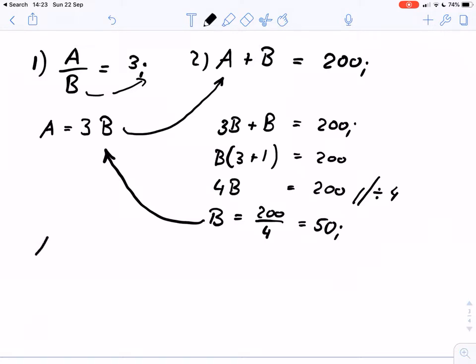And we can say A equals 3 times B equals 3 times 50, and therefore A equals 150. So B equals 50, A equals 150.